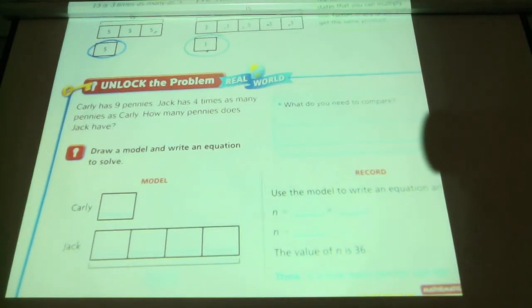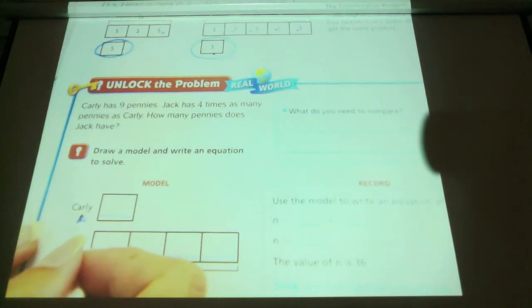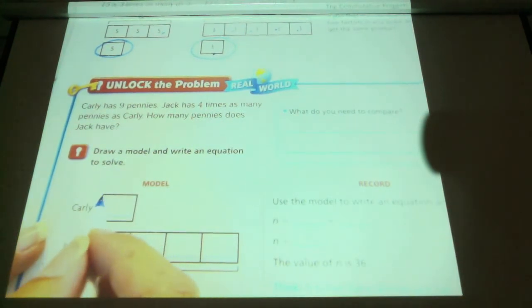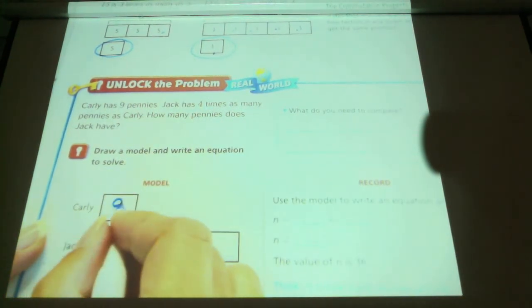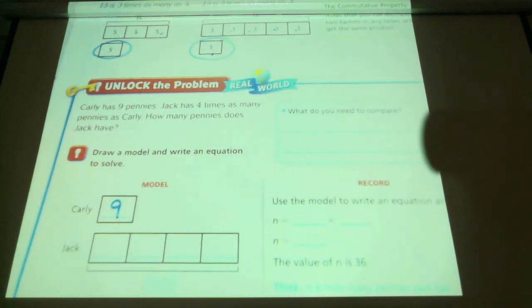Okay, so Carly has 9 pennies. Jack has 4 times as many pennies. How many pennies does Carly have? So we're going to look at Carly. How many pennies does Carly have? She has 9 pennies. So this is what 9's going to look like. That's Carly, and that's what 9's going to look like.